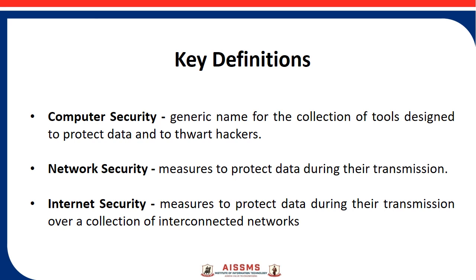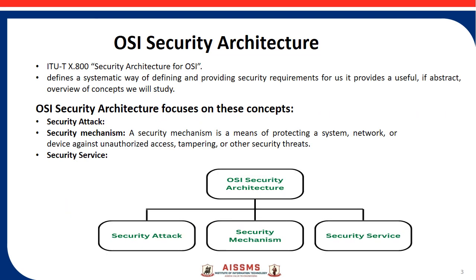First we will see the key definitions of cryptography. Computer security is a generic name for the collection of tools designed to protect data and to deter attacks by hackers. Network security refers to measures to protect data during transmission. Internet security refers to measures to protect data during transmission over a collection of interconnected networks.